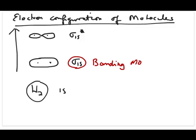And when you add the two 1s atomic orbitals through destructive interference, you get the other type of molecular orbital called the antibonding MO.